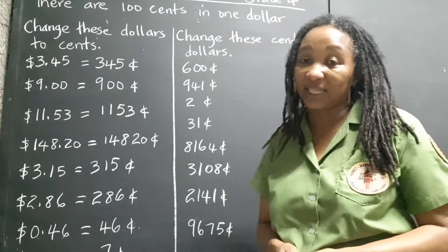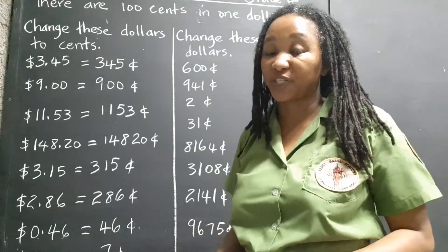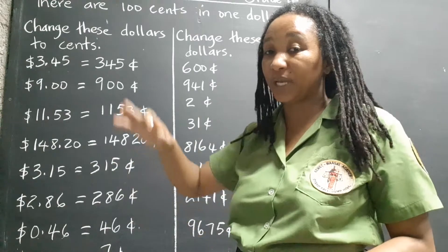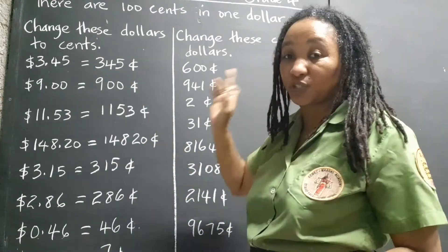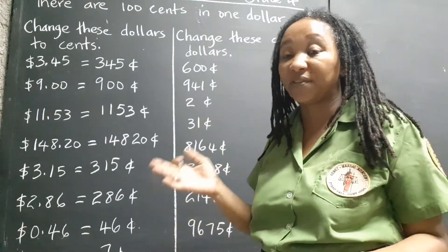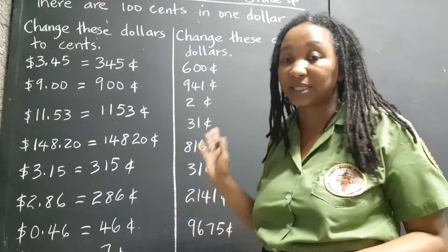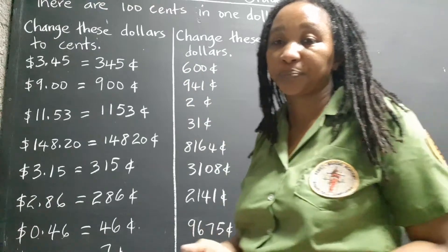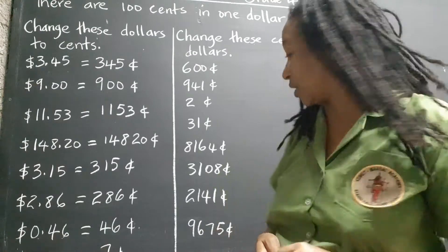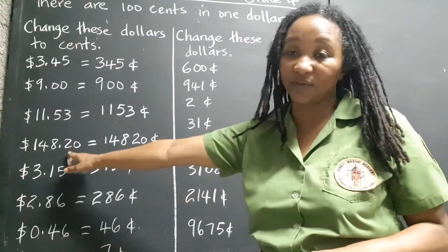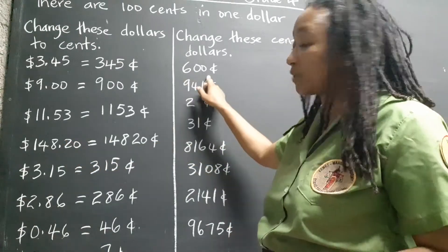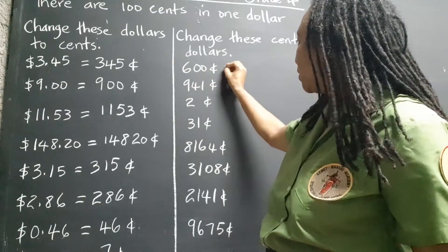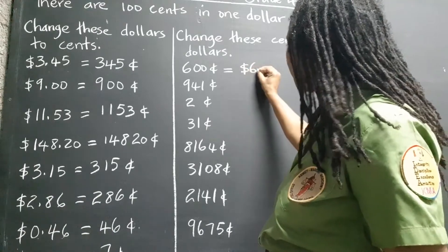Now let's change the cents back to dollars. It would be the opposite operation. Since when we're changing dollars to cents we multiply by 100 or move two places to the right, if we're changing cents to dollars we would do the opposite — we would divide by 100, moving two places to the left, starting at the end. So you should always have two decimal places when dealing with dollars and cents. So 600 cents — move the decimal point from the end two places to the left — would give $6.00.